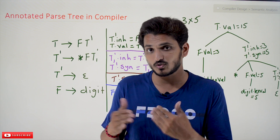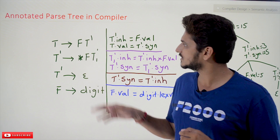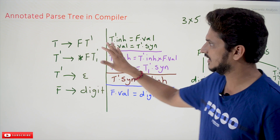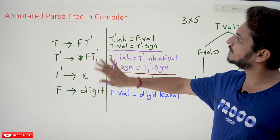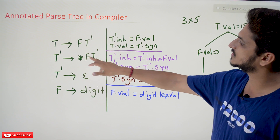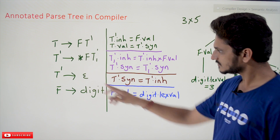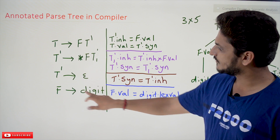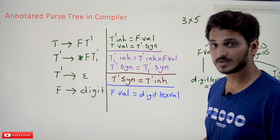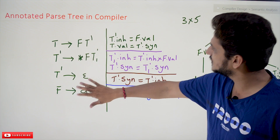Before going into the concept of annotated parse tree, let's have a deeper understanding of synthesized and inherited attributes. Let's take an example grammar: T → F T', T' → star F T'1 (T1' for differentiation), T' → epsilon, F → digit. This is a simple CFG that takes simple expressions based on multiplication.